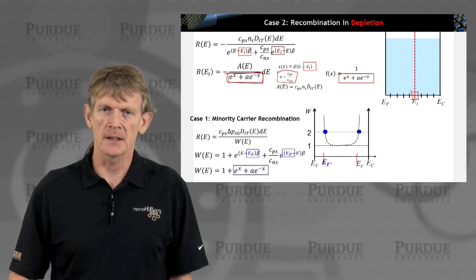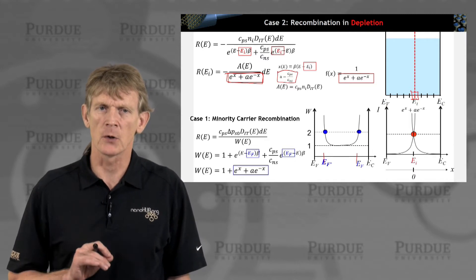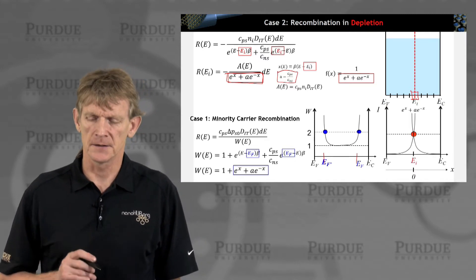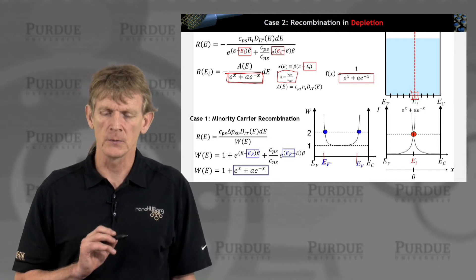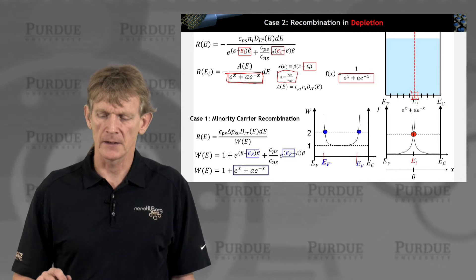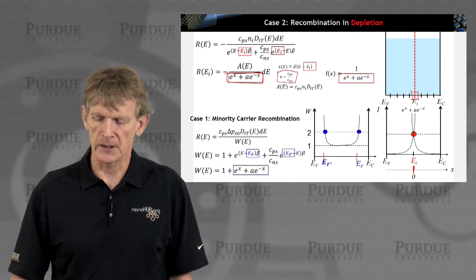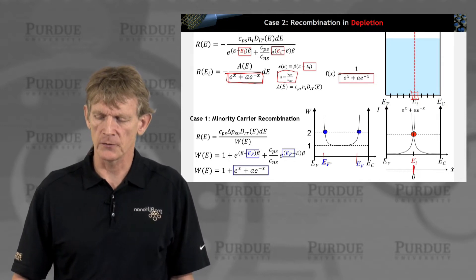We have this function f of x, and in the denominator it has two growing and decaying exponentials. We know that for x equal to 0, that term is 1 plus a.